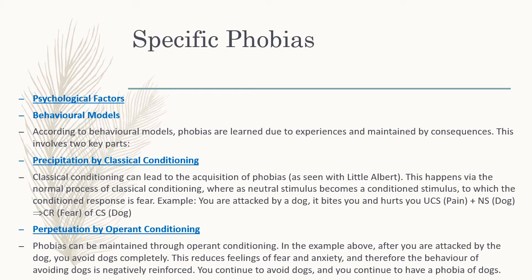Moving to psychological factors, the behavioural models look at classical and operant conditioning. This is a question that gets asked a lot in the exam. A phobia is precipitated by classical conditioning and perpetuated by operant conditioning — brought on by classical and maintained by operant. Classical conditioning can lead to the acquisition of phobias via the normal conditioning process, where a neutral stimulus becomes a conditioned stimulus to which the conditioned response is fear.